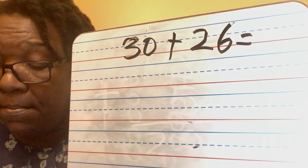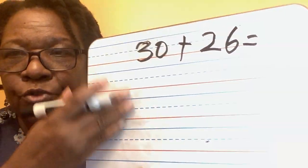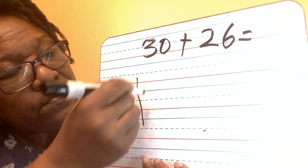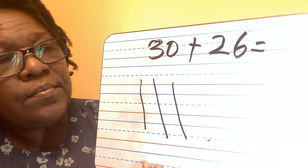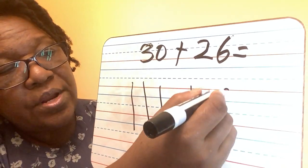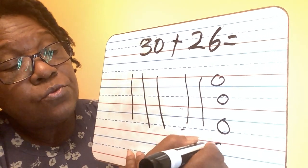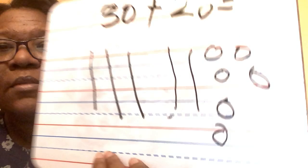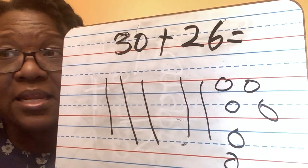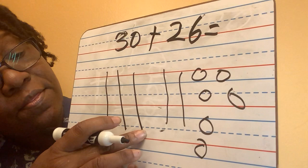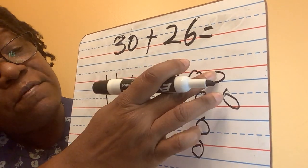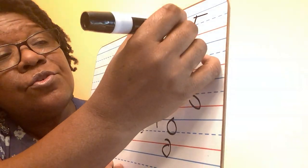Let's do another one: 30 plus 26. This time I'm not going to use my tools — I'm just going to draw. How would I do 30? I represent 10, 20, 30. And this is 26: 10, 20, 21, 22, 23, 24, 25, 26. Now all you have to do is have your child count them: 10, 20, 30, 40, 50, 51, 52, 53, 54, 55, 56. The answer is 56.